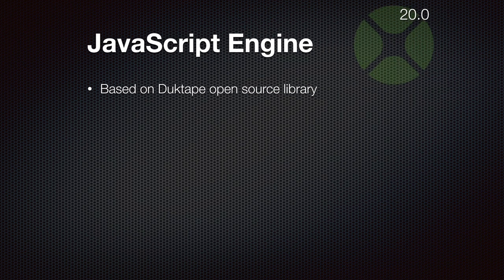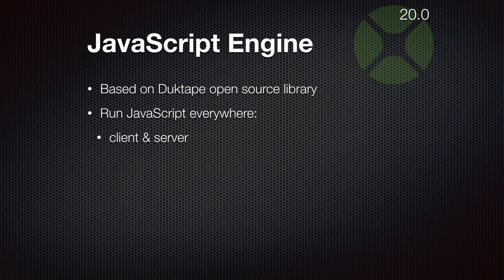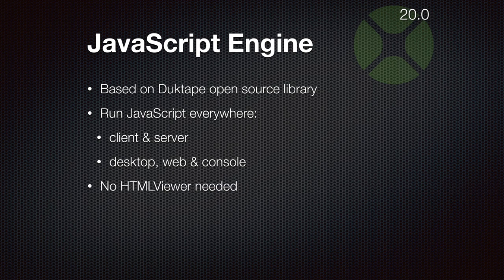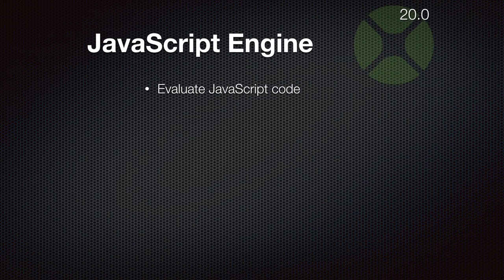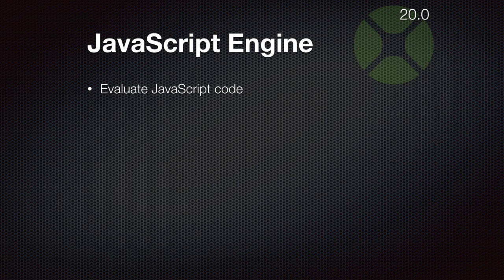The MBS plugin includes a JavaScript engine based on the open-source DuctTape library. It allows you to run JavaScript within your application. This can be used on client and server code — you can use it in a web application on the server, or in a desktop application on the client, or even in a console application. You don't need any HTML viewer as we use the built-in JavaScript library. You can send JavaScript code to the library to evaluate it and get back the result. We convert all the parameters from Xojo data types to JavaScript and back.